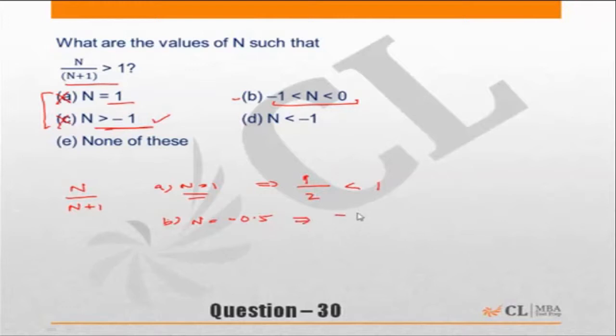This implies the numerator becomes -0.5 and the denominator becomes 1 + n, which means -0.5 + 1 = 0.5. So we get -0.5/0.5 = -1, which is less than 1. Hence, choice B is also incorrect.